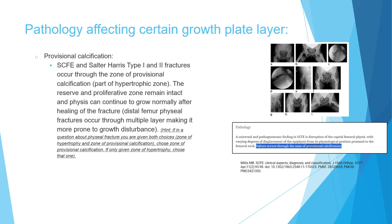If you get a question about physeal fractures and are given both options — zone of hypertrophy and zone of provisional calcification — pick the zone of provisional calcification, as it is more specific. If only zone of hypertrophy is given as an answer, pick that, since in some textbooks provisional calcification is considered part of the hypertrophic zone.